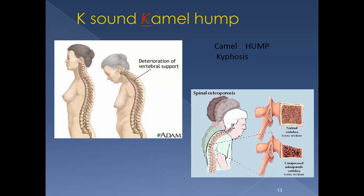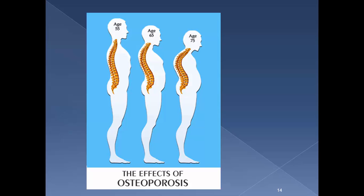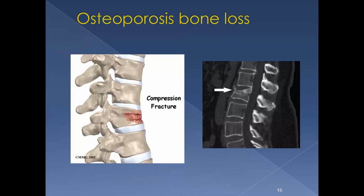This image shows the camel hump you may see with kyphosis. And this shows the bone loss and how patients can have compression fractures as the vertebrae basically collapse on each other.